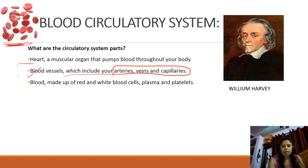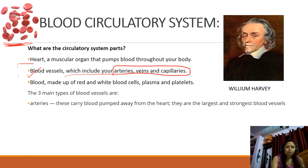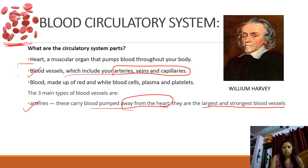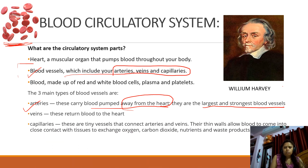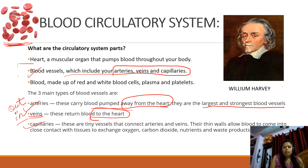The three main types of blood vessels are arteries, veins, and capillaries. Arteries carry blood away from the heart — they are the largest and strongest blood vessels. Veins do the opposite: they take blood back towards the heart. So blood comes out from the heart through arteries and returns to the heart through veins. Arteries take blood away from the heart, and veins take blood into the heart.